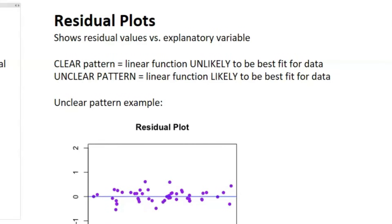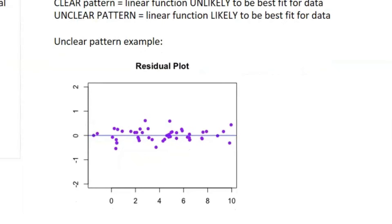So the last thing we're going to cover now is residual plot. It pretty much just plots residual values versus the explanatory or independent variable. If there's a clear pattern, that means a linear function is unlikely to be the best fit for the data. If it's an unclear pattern, that means a linear function is likely to be the best fit for the data. And here is an example of the unclear pattern. You can see it's just pretty much random dots. So in this case, a linear function would be likely. Something like a clear pattern would be like a U-shaped parabola, whatever. That means it would be unlikely for a linear function to be the best fit for that data.